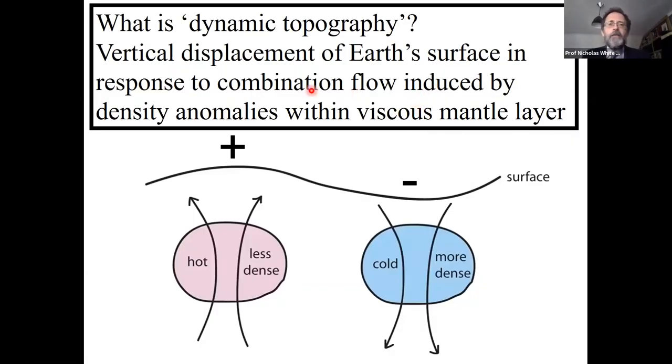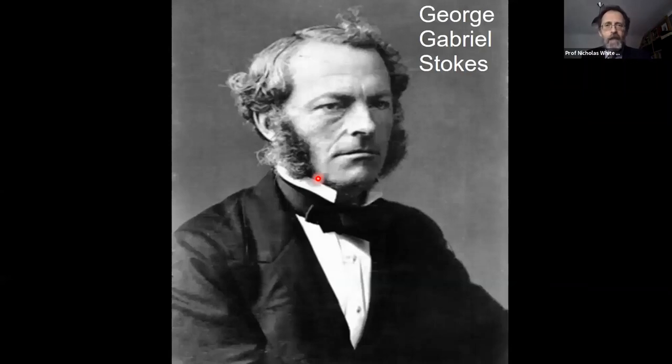Dynamic topography is generated by flow within the viscous mantle. We have density anomalies, either less dense or more dense objects within the mantle. Because the mantle has finite viscosity, you get flow, either upward or downward, and that produces some fraction of the total topography of the Earth.